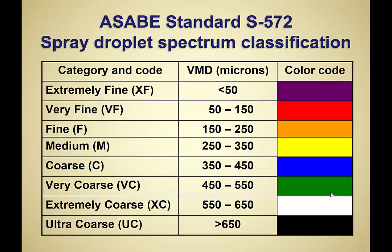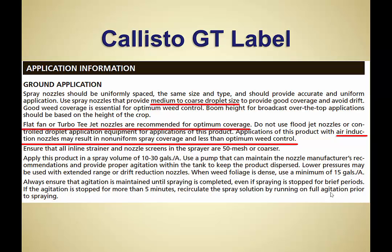The industry is moving toward droplet spectrum categories defined by ASABE standard S572. These go from Extremely Fine all the way to Ultra Coarse, and each category has an acronym and a color code. As a reference, the VMD range for a Medium droplet spectrum is roughly 250 to 350 microns. So if a label told you that you needed a medium droplet spectrum, you'd know you're targeting a VMD somewhere in that range. Ultra Coarse has a VMD greater than 650 microns.